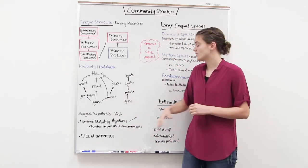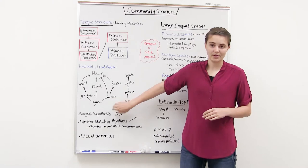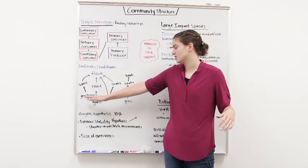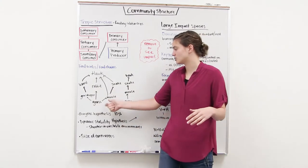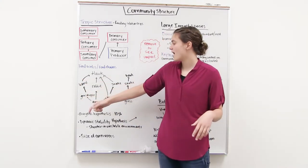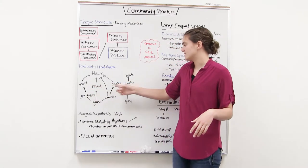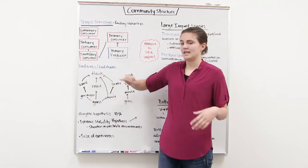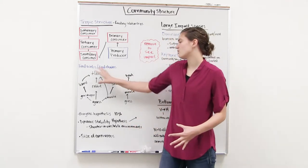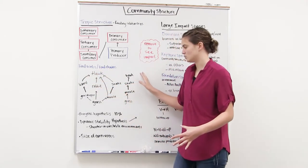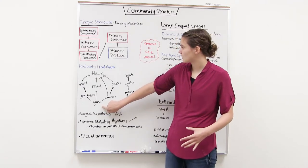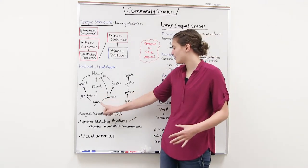I drew a simple food web here. The grasses are getting eaten by the rabbits, grasshoppers, and mice. The mice are getting eaten by snakes and hawks. The grasshoppers are getting eaten by lizards. And lizards, rabbits, and snakes are all getting eaten by hawks. So we have more than just one interaction — this is the whole food web.